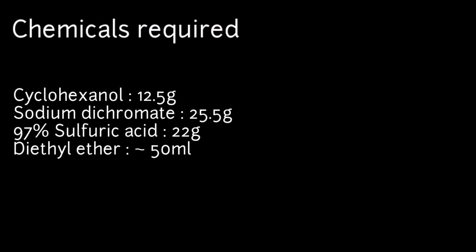Chemicals that you will need for this synthesis are 25.5 grams of sodium dichromate, 22 grams that is 12 milliliters of 97% sulfuric acid, 12.5 grams of cyclohexanol, and approximately 50 milliliters of diethyl ether.